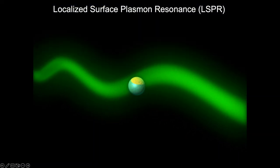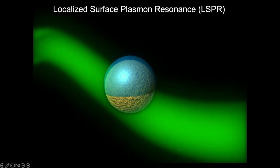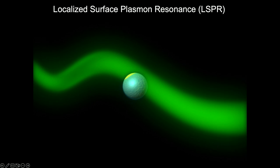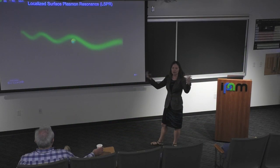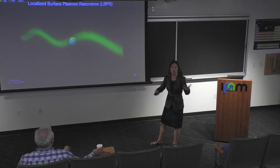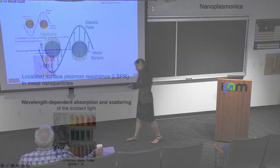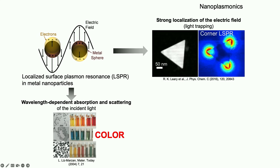The bread and butter of my work is to look at oscillations — this is a localized surface plasmon resonance, LSPR. It occurs in a small metallic particle. Imagine you have a cloud of electrons; you send in an electric field and at a certain frequency you basically get a resonance. That leads to wavelength-dependent absorption and scattering of light — so that leads to color. These particles have a color.